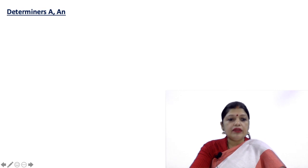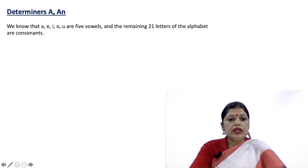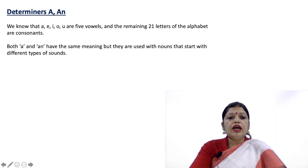Determiners A and An. We know that a, e, i, o, u are five vowels, and the remaining 21 letters of the alphabet are consonants. Both A and An have the same meaning but they are used with nouns that start with different types of sounds.